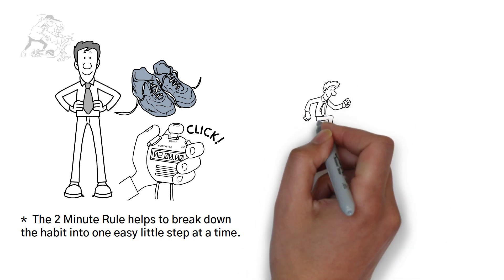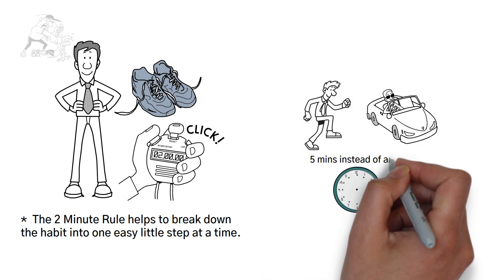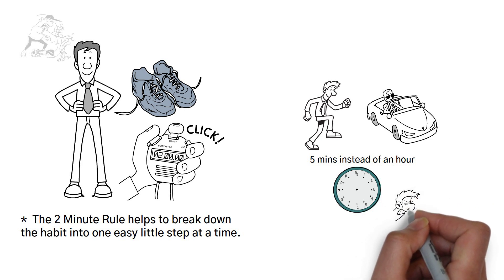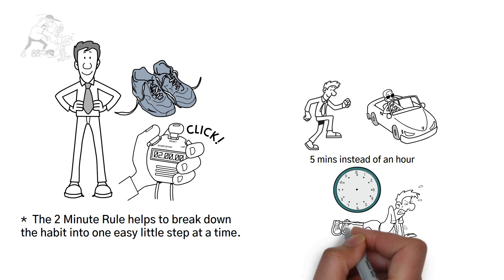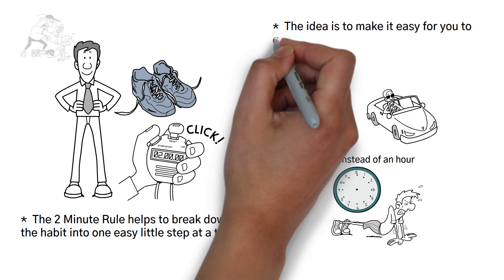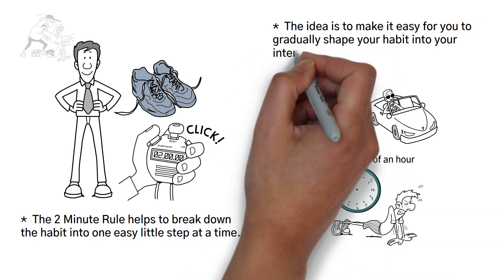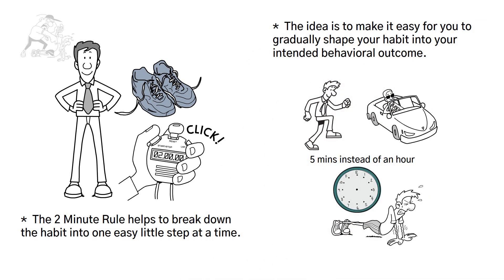Next, add walking or driving to the gym or exercising for five minutes instead of an hour. Build upon your new habit and create your own system by incrementally increasing a small chunk of the change in behavior every single time. The idea is to make it easy for you to gradually shape your habit into your intended behavioral outcome.